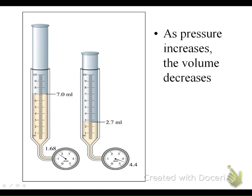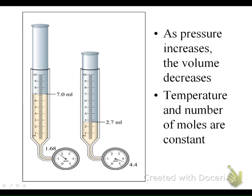This PowerPoint slide is showing another version of the pressure and volume relationship. My volume reading is 7 here and 2.7 here. As we can see, we're going to decrease the volume, which should cause our pressure to increase — and our reading does confirm it increases. The temperature and number of moles are held constant. Remember there are four measurable parts of a gas: pressure, volume, temperature, and number of moles.